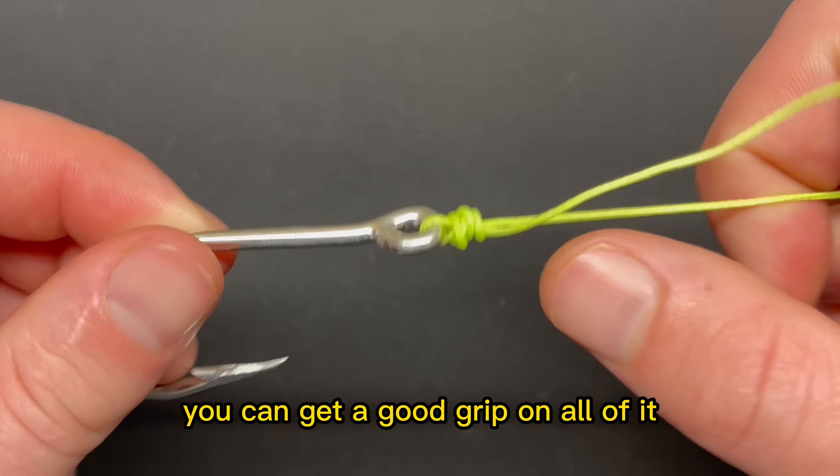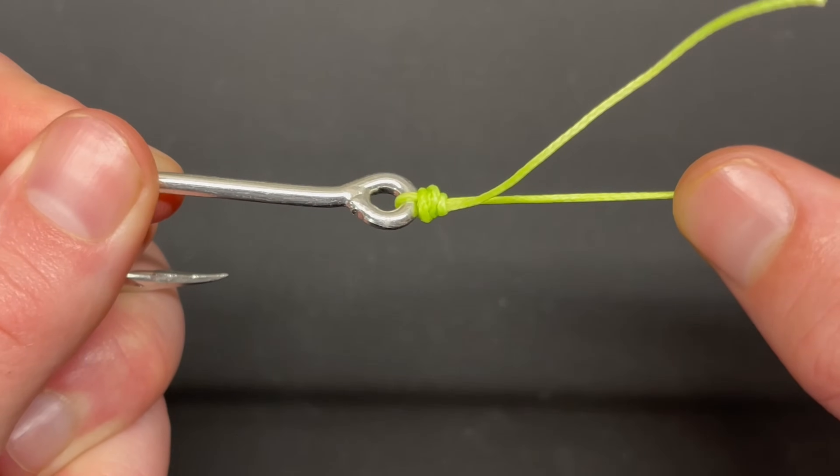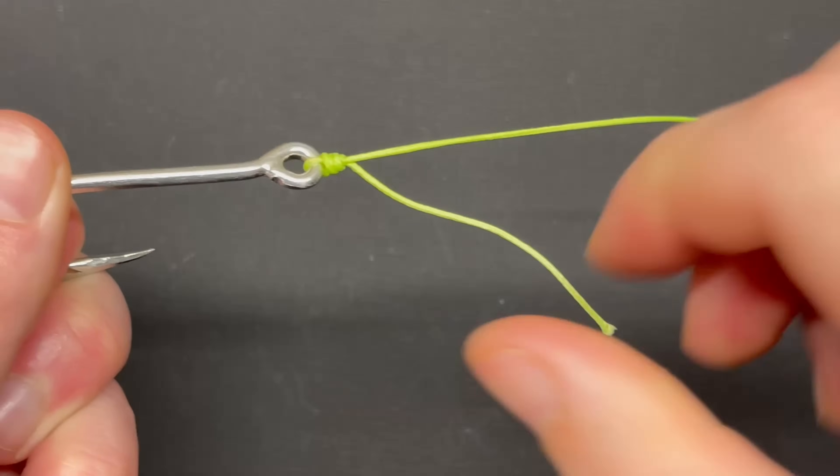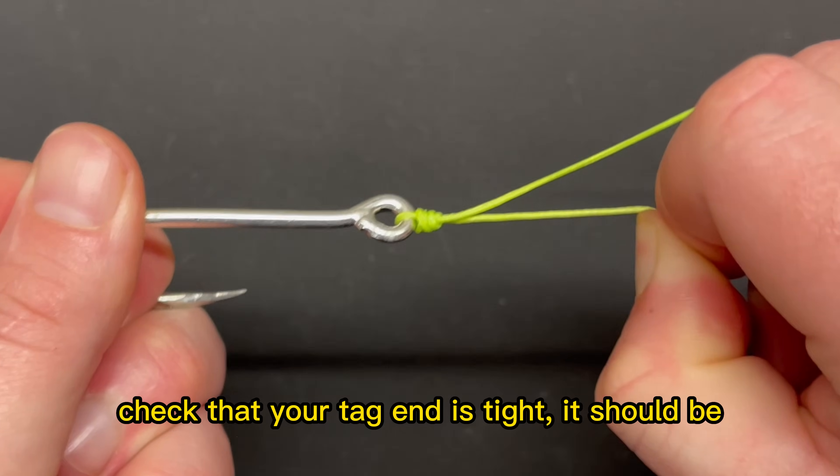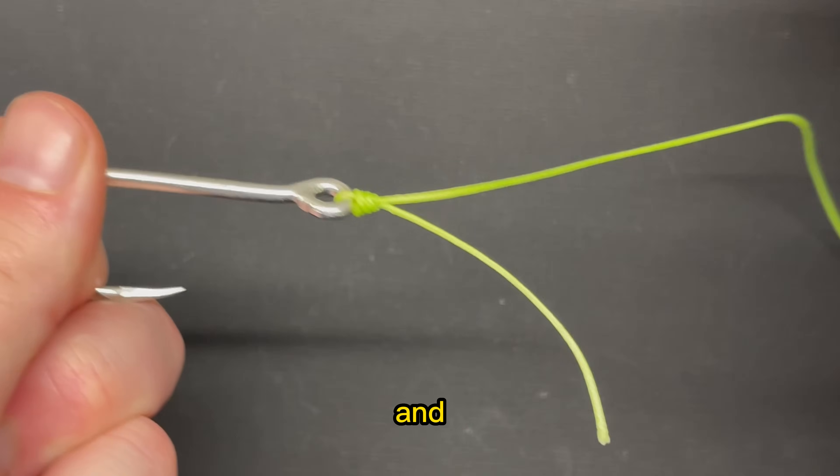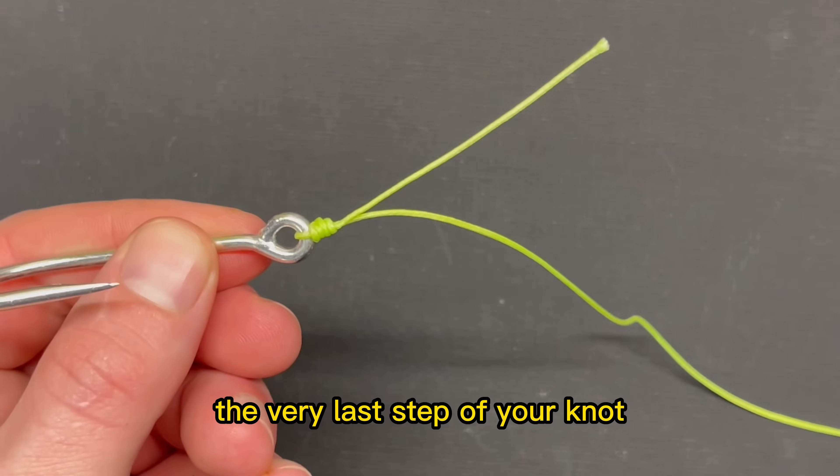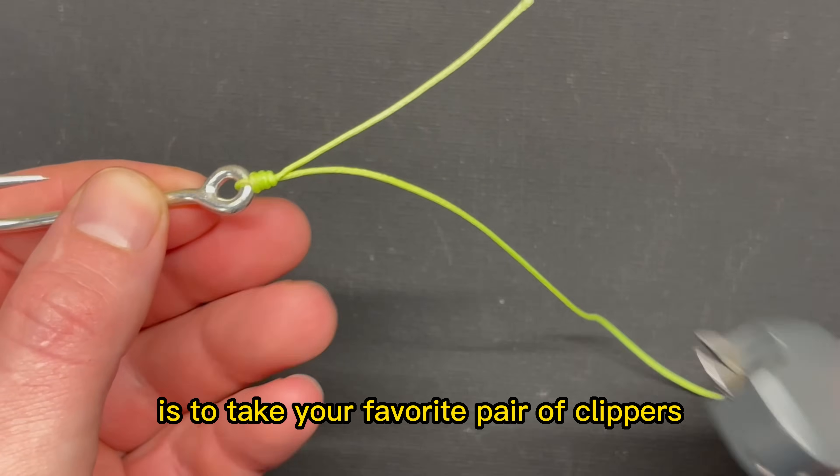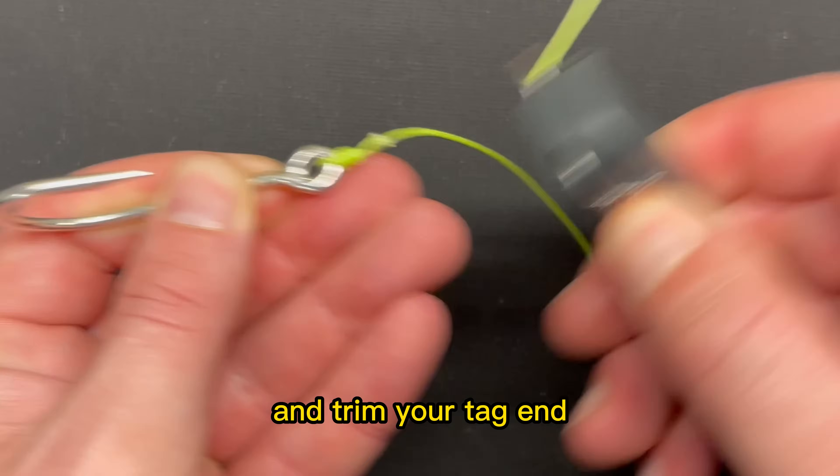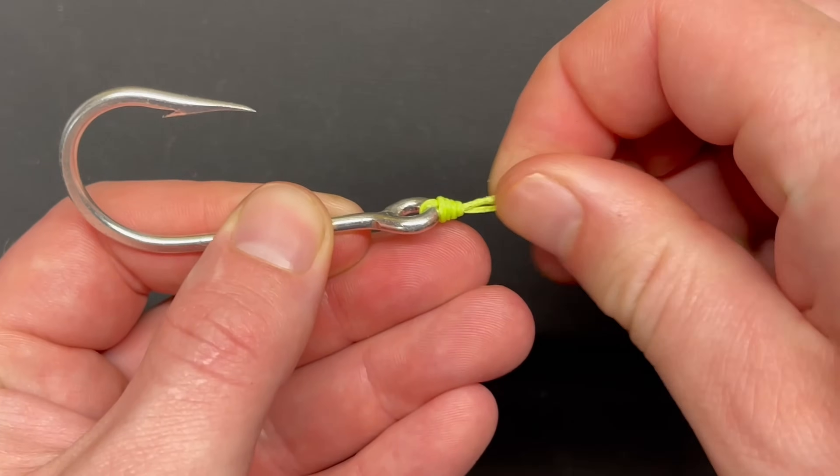And then at that point, you can get a good grip on all of it and pull tight on the main line. Check that your tag end is tight. It should be. The very last step of your knot is to take your favorite pair of clippers and trim your tag end.